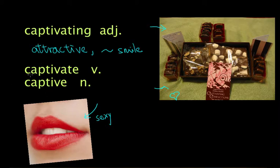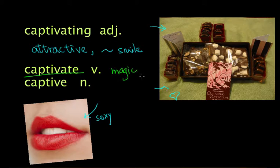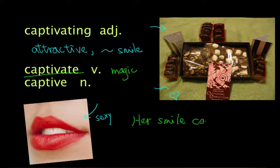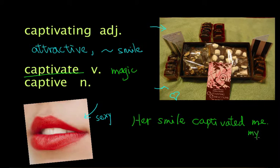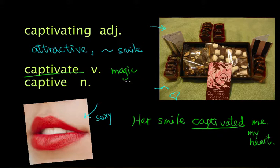That's the word captivating. And of course, we can see that the verb is captivate. To captivate is to attract. Usually there is something like a magic there. For example, you can say her smile captivated me, or her smile captivated my heart. To attract — and it seems that there is something magical there.